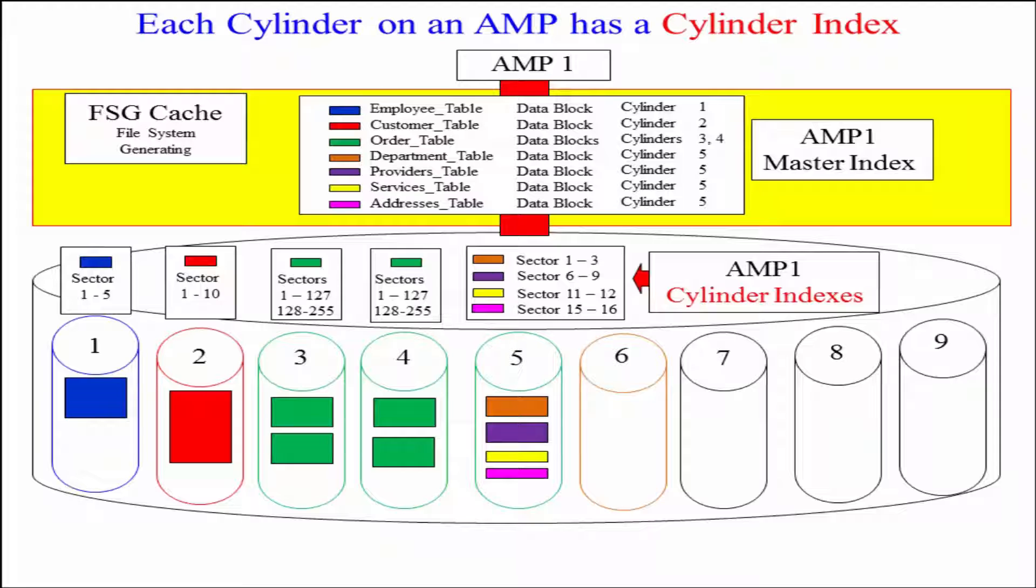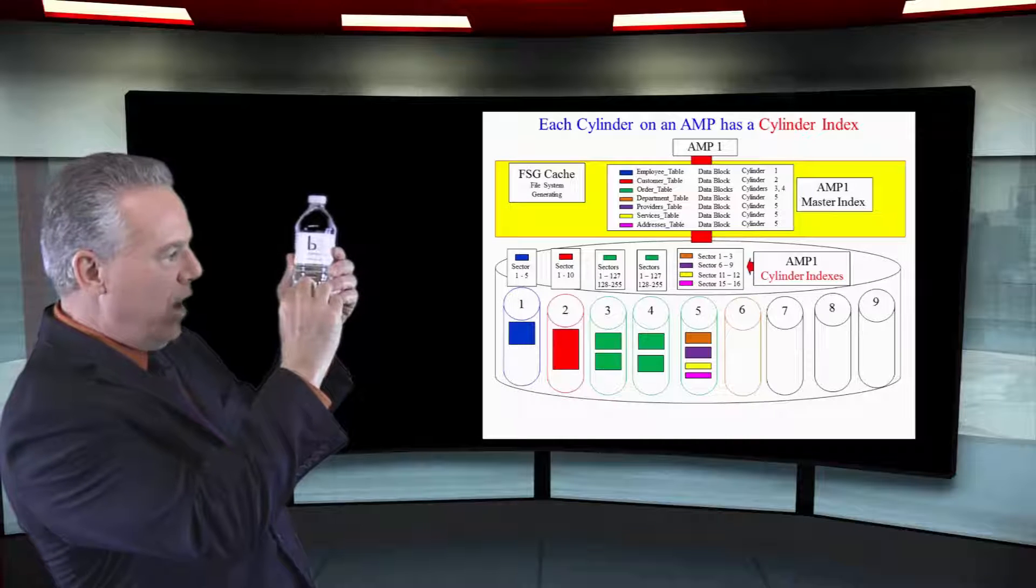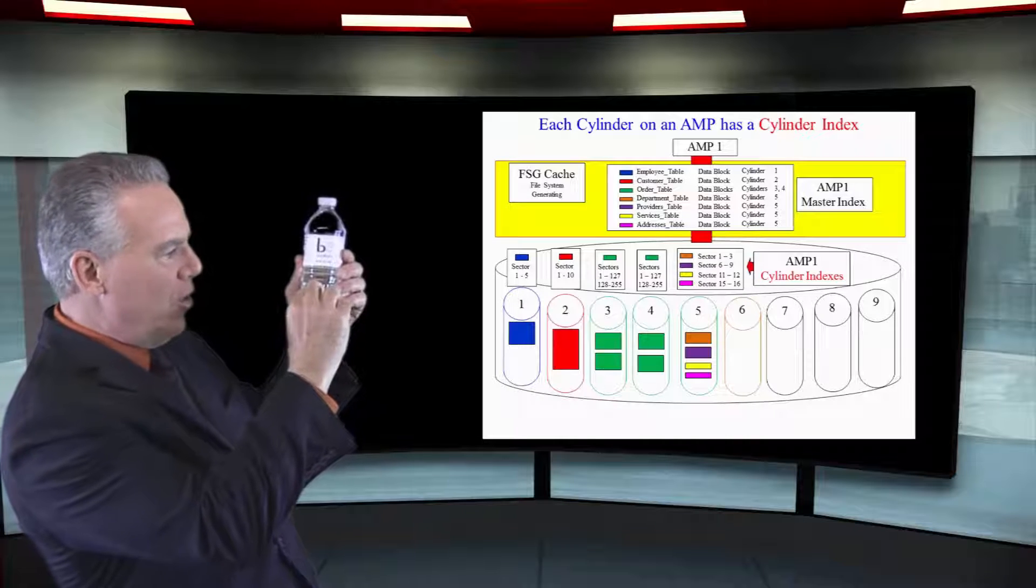And for every cylinder, it's got a series of cylinder indexes. If it's got 50,000 cylinders, it's got one master index and it's got 50,000 different cylinder indexes. You see, the master index says that table is in this cylinder or this set of cylinders. But we know that data comes in sectors or blocks and that's the way it should be described. I've got four tables in this cylinder.